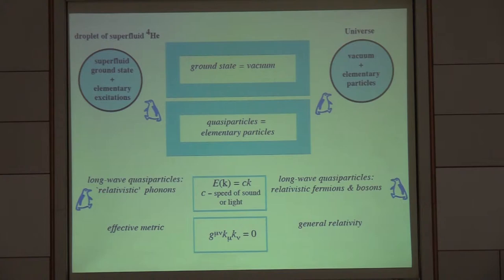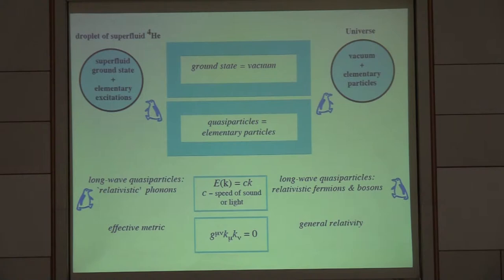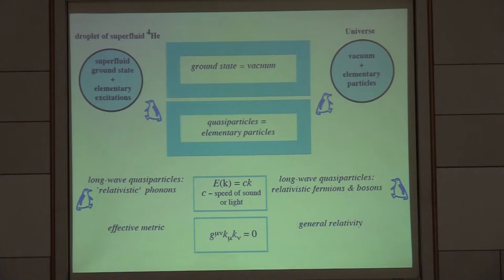Why was it possible to consider such situations that we have the ground state and elementary particles? Because now we have a very low temperature compared to the characteristic Planck scale. At low temperature, there are not many excitations, they are dilute, and that's why the main part comes from the vacuum.